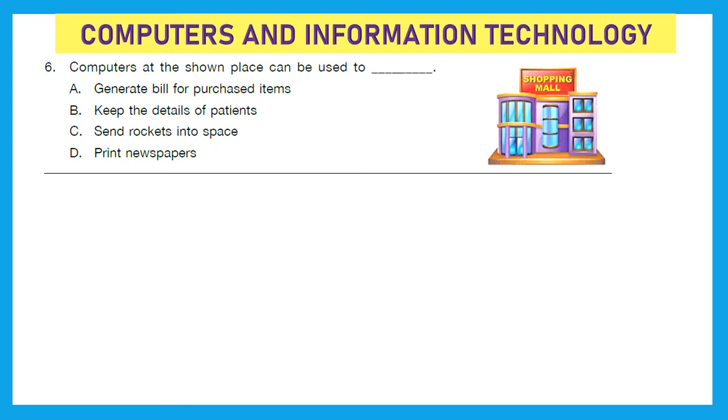Moving to the next section, that is Computers and Information Technology. Question 6: Computers at the shown place can be used to - and the place shown is a shopping mall. Option A is generate bills for purchased items. That's right because we have seen that the operators over there generate bills for purchased items on a computer. Option B keep the details of patients - no. Send rockets into space - no. Print newspapers - no. Right answer is option A.